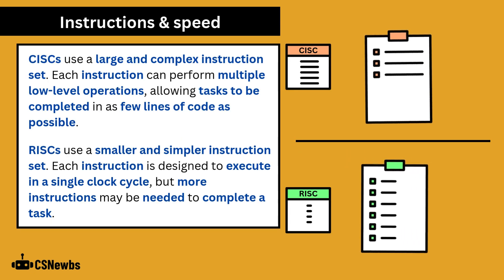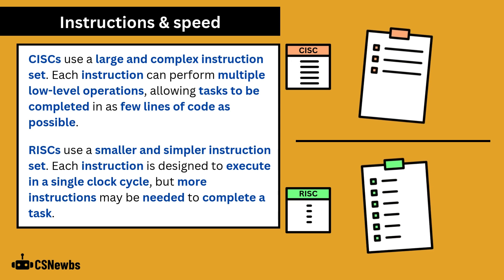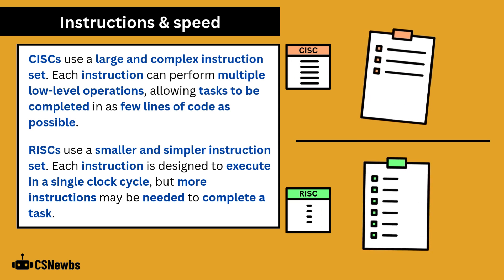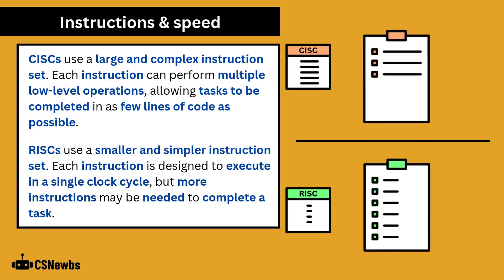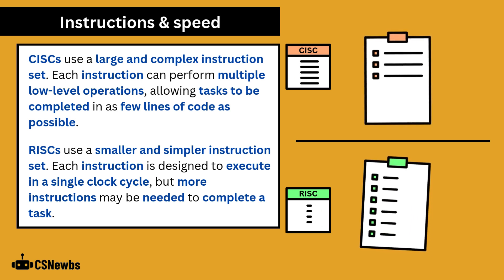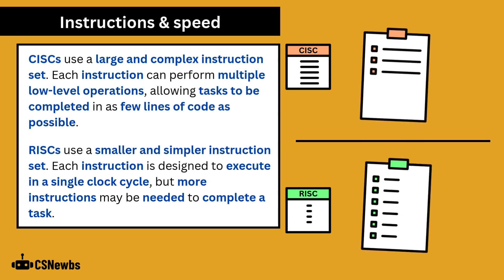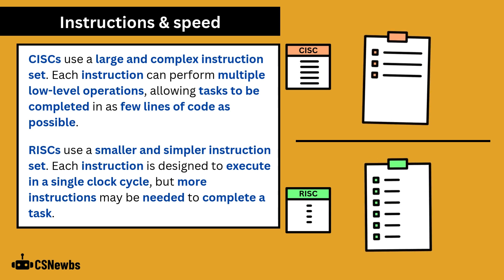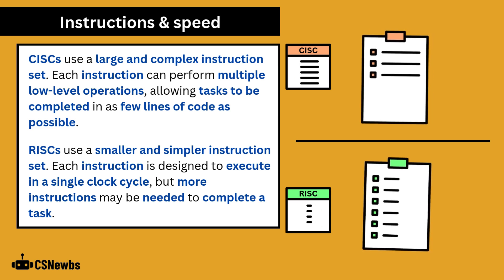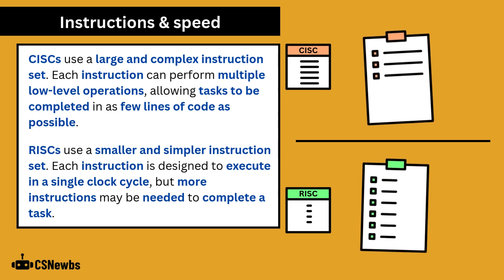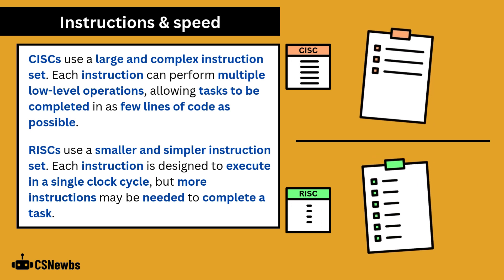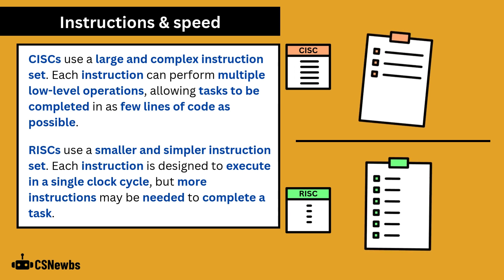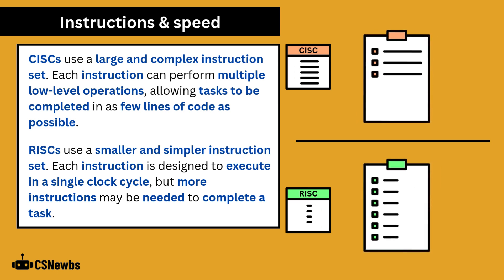CISC processors use a large and complex instruction set. Each instruction can perform multiple low-level operations, allowing tasks to be completed in as few lines of code as possible. RISC processors use a smaller and simpler instruction set. Each instruction is designed to execute in a single clock cycle, but more instructions may be needed to complete a task.